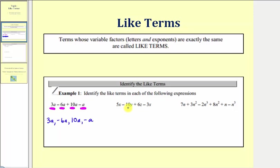Our next expression is 5x minus 10y plus 6z minus 3x. Notice how we have a total of four terms, but only two of them are like terms because only two of them have the exact same variable factors. This first term 5x has exactly one factor of x and so does the last term negative 3x. So the like terms are 5x and negative 3x.